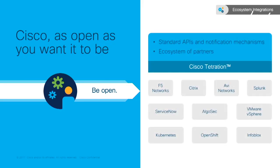Tetration is built from the ground up to be an open platform. That means RESTful APIs and a Kafka bus that you can subscribe to in any number of ways, so we can integrate out of the box with firewalls and load balancers, understanding application relationships even as applications traverse application delivery controllers. We can integrate with service management — ServiceNow being one popular example — as well as automation and platform tooling like Kubernetes. It is open and published, so you're able to build your own custom applications or leverage it in any way to drive automation and scale in the way you operate.